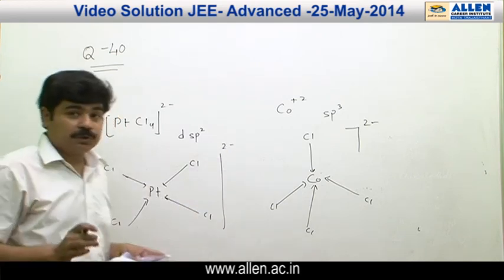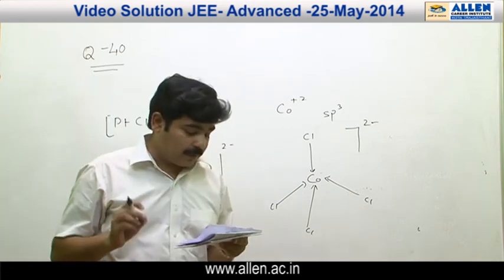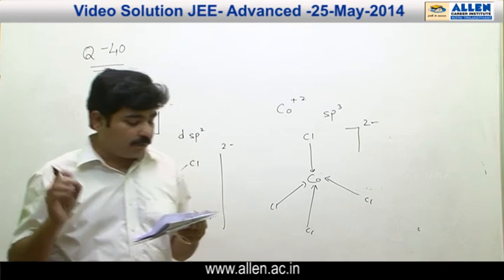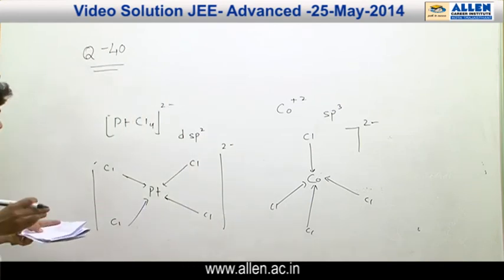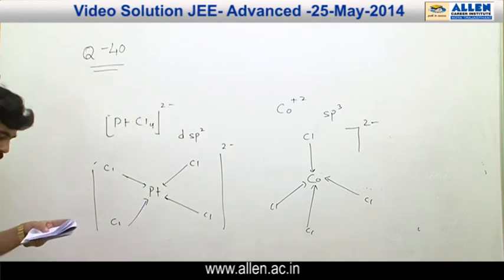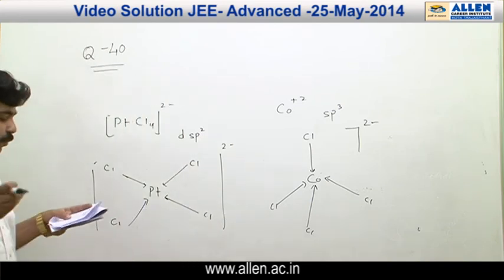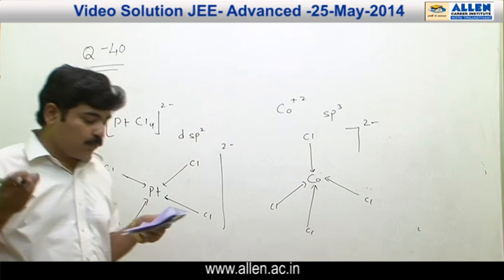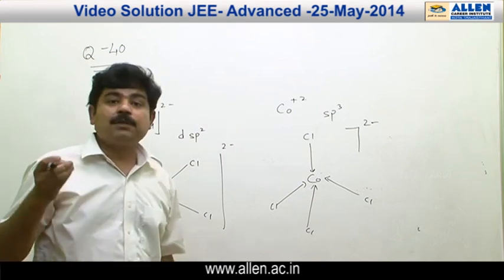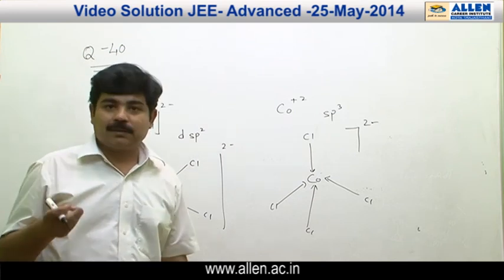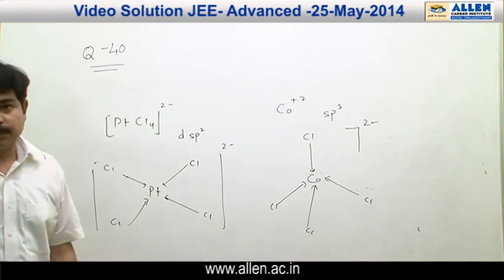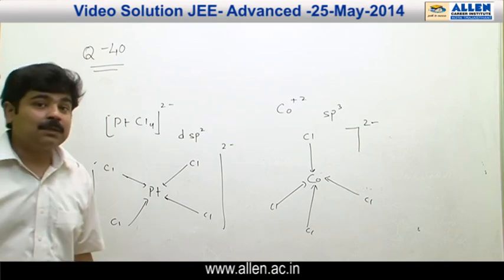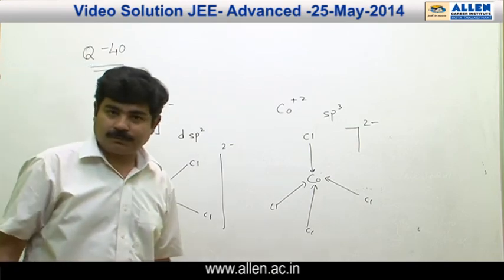From the above discussion, it is clear that XeF₄, BrF₄⁻, [Cu(NS₃)₄]²⁺, and PtCl₄²⁻ have square planar geometry. Therefore, the answer is 4.